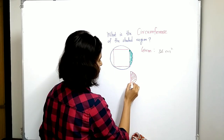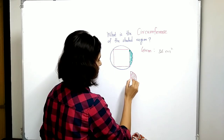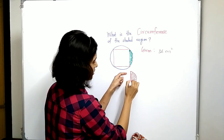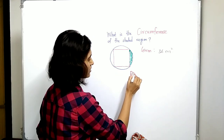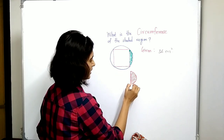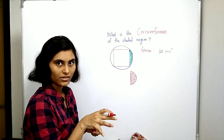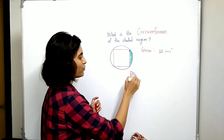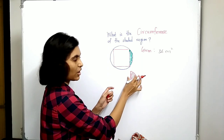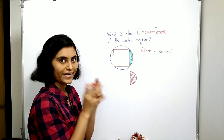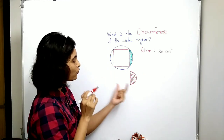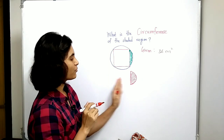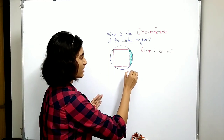This is the side of the square, and this is an arc of the circle. That means we just have to find out the length of this boundary of the given shaded region. So how to find this circumference? First of all, let us find out what is the length of this side.